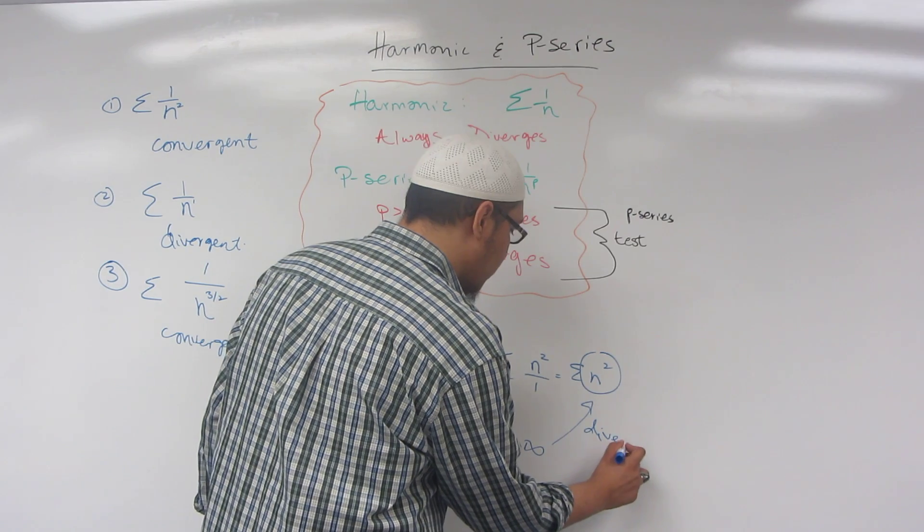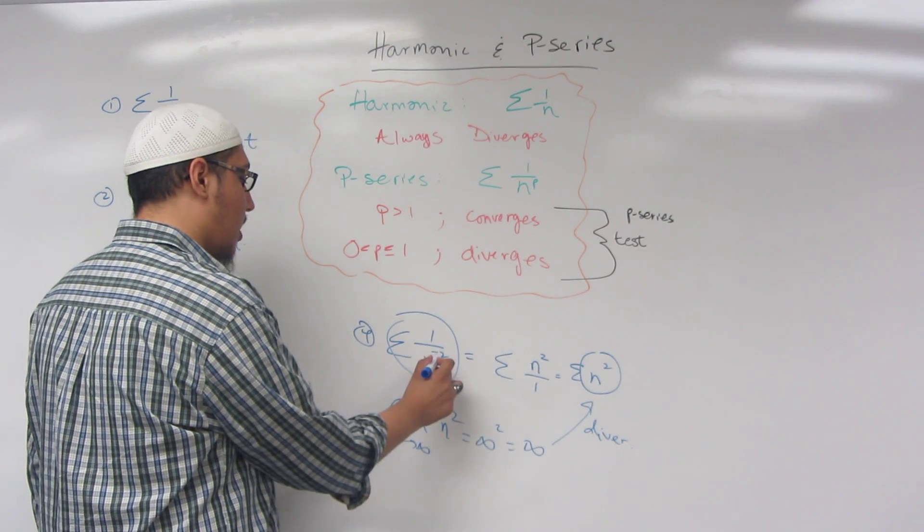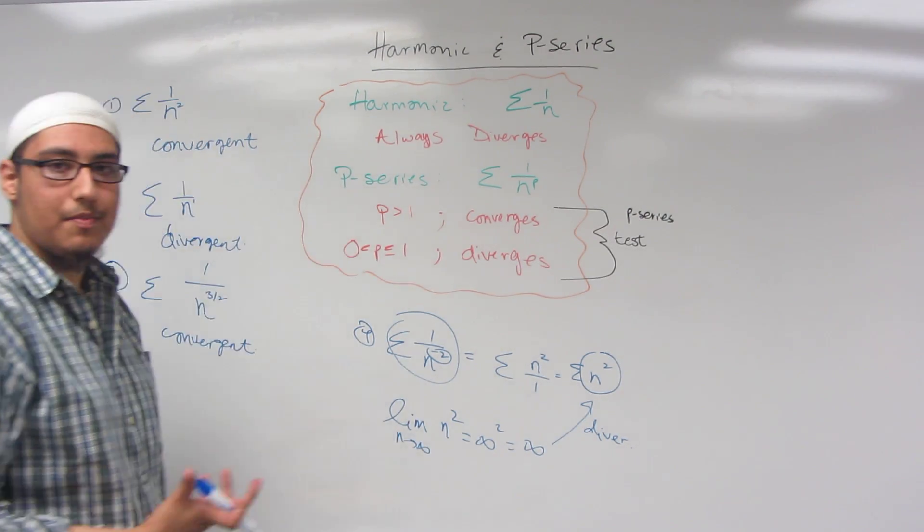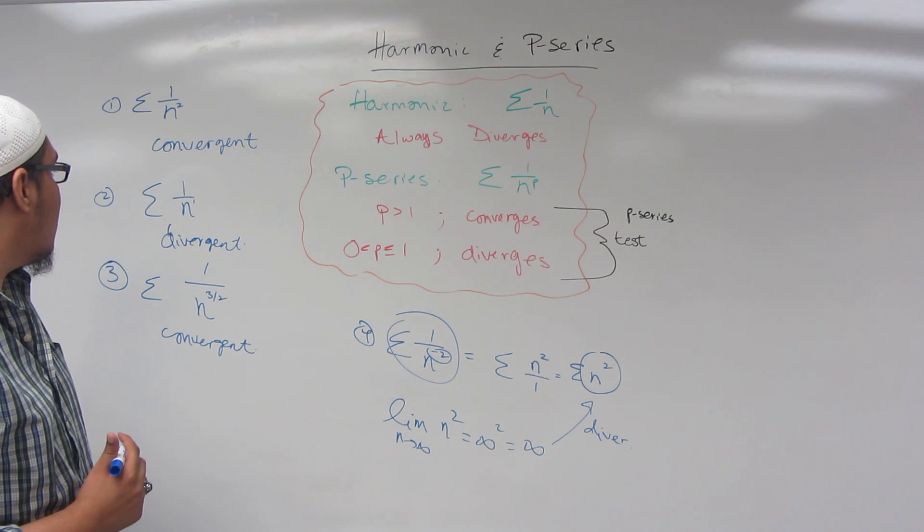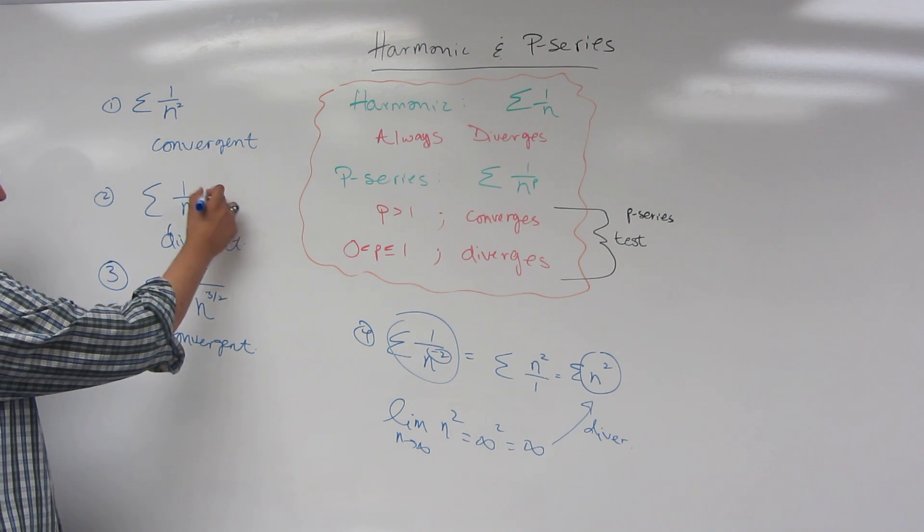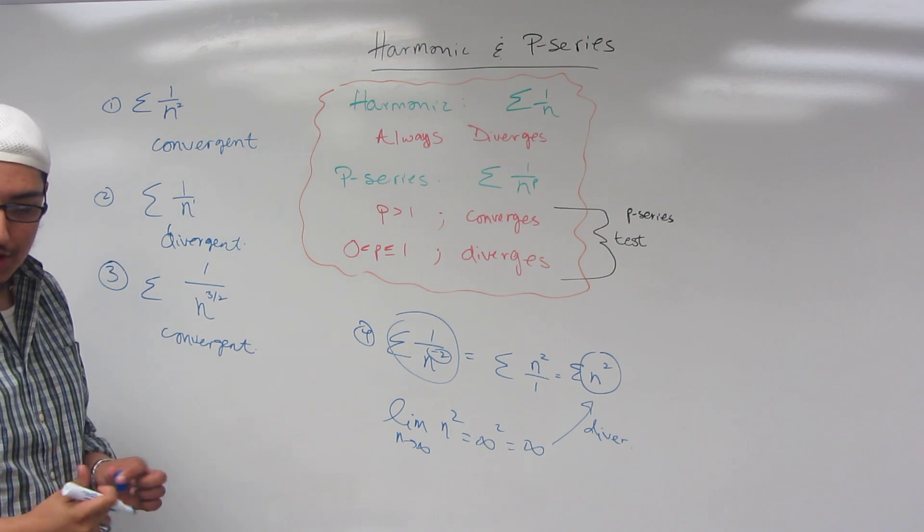Now, the reason why I wanted to show you this example was because of this specific p-value. What if for this example here, number two right here, what if I changed it a little bit? What if I said that this were now number two, sigma two over n.